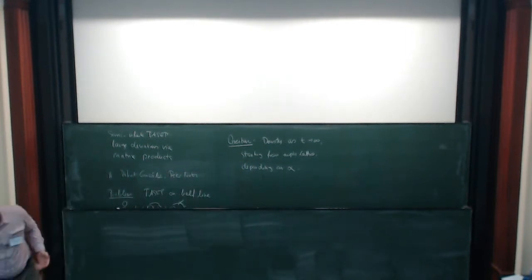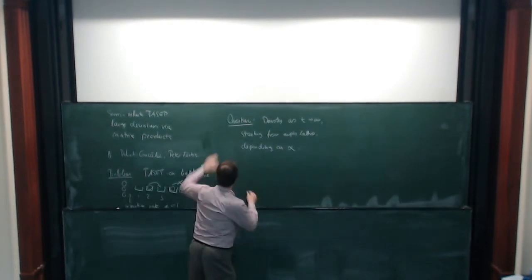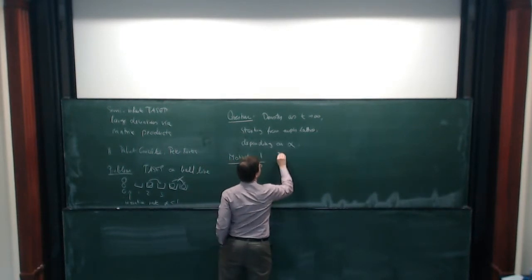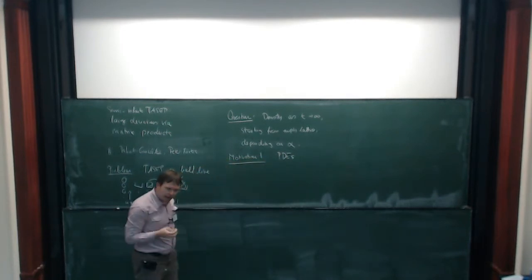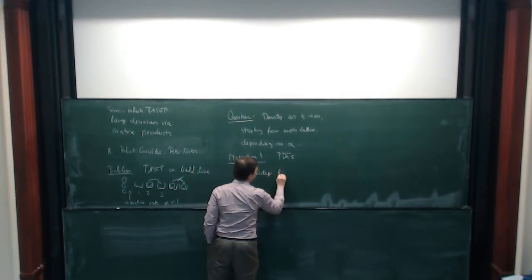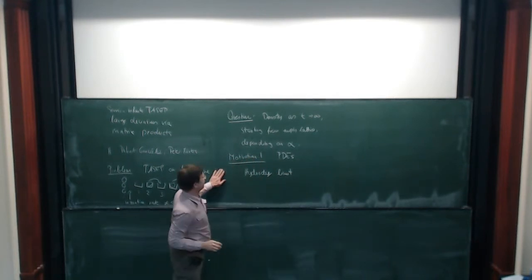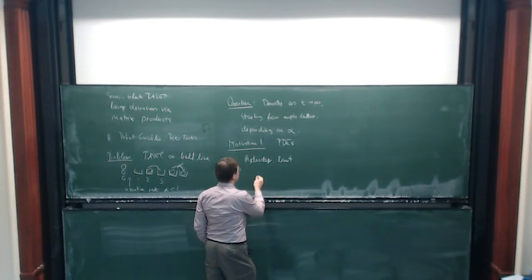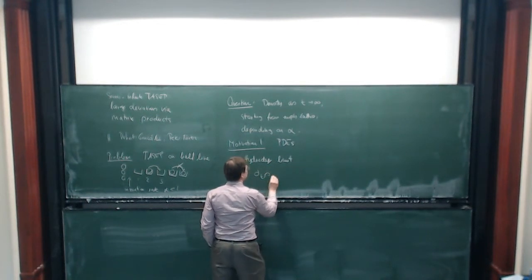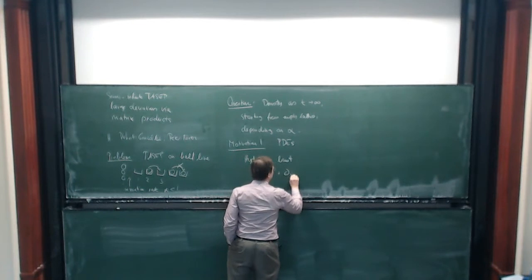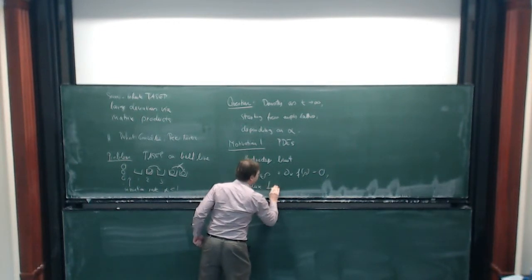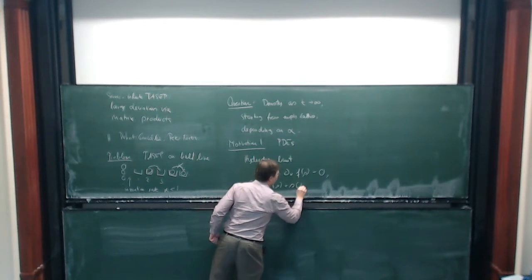There are two kinds of motivations for this problem. Motivation one comes from the hydrodynamic limit of these diffusion processes. This is Burgers' equation, as seen in the last talk, without noise and diffusion. The hydrodynamic limit is the equation: partial_t rho plus partial_x f(rho) equals zero, where the flux f is rho times 1 minus rho.